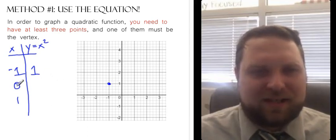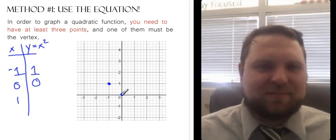For 0, I take that x value and I put it in right there. 0 squared is 0. So another point on the graph is (0, 0). Well hey, we knew that. That was the vertex. Of course that's going to be on there.